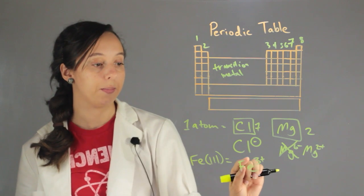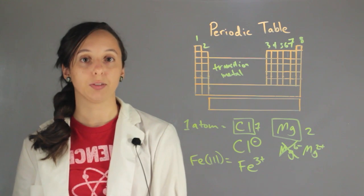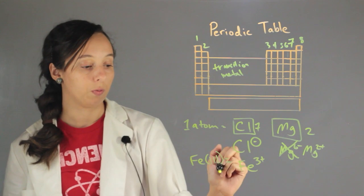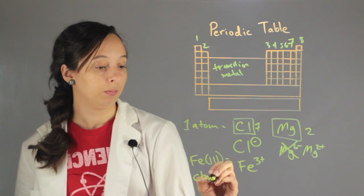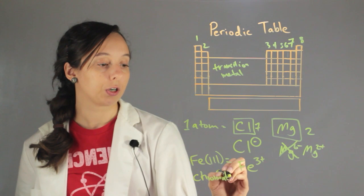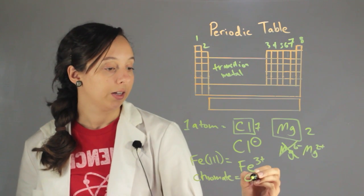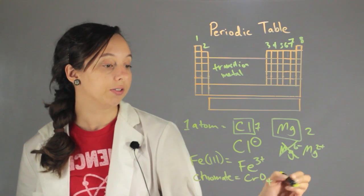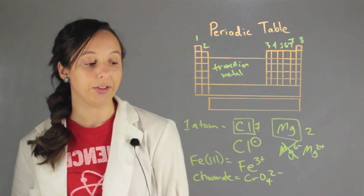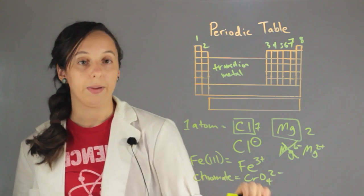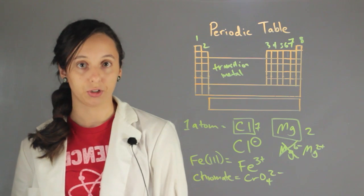And the last type of ion is something that has more than one element or more than one atom. So for instance, chromate. And you would just learn what chromate is by memorizing it. It's chromium, four oxygens, and it has a charge of two minus. And there's whole tables and lists of named compounds that are ions. And you just have to memorize those charges.